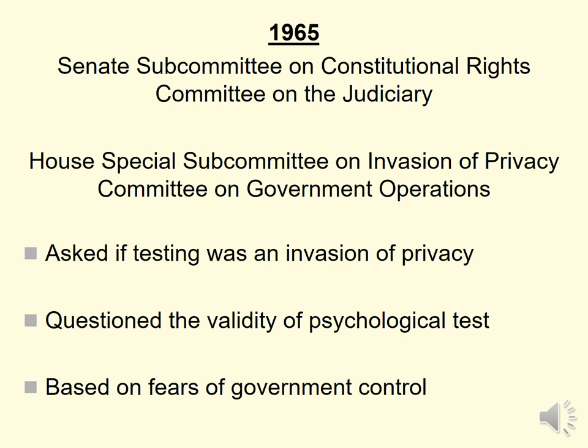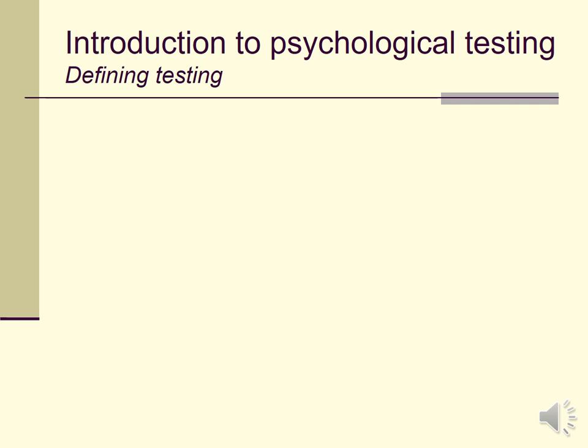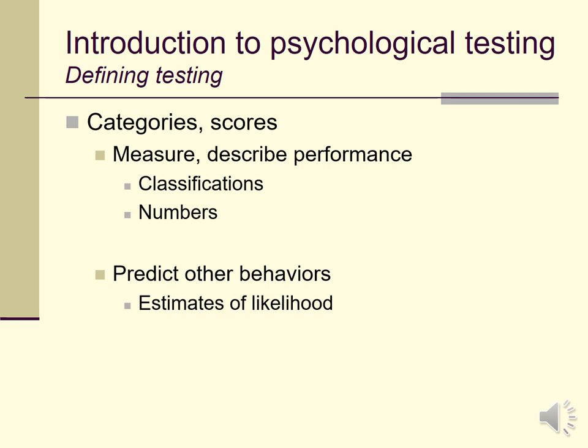Be that as it may, tests involve purposive, empirically derived samples of behavior that are scored or categorized. We use people's responses to make classifications or develop scores that predict or relate to other behaviors of interest. The Beck Depression Inventory is useful because it gives us a way of measuring aspects of depression. The Beck Suicide Scale is likewise related to suicidality. We're often interested in the extent to which we can describe or predict future emotions, thoughts, and behavior.